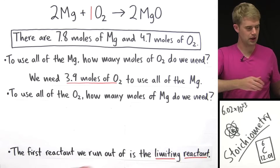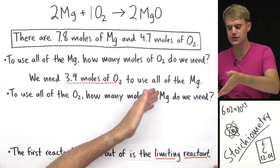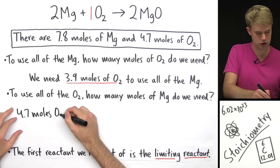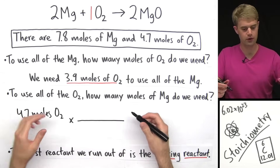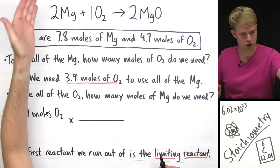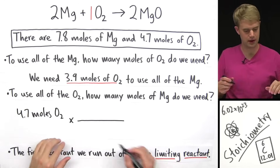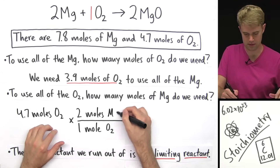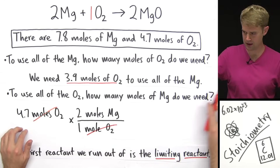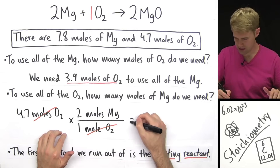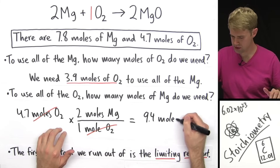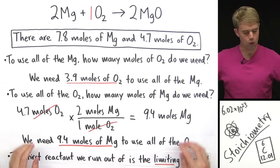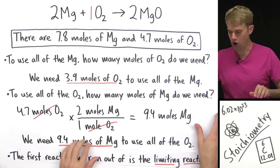Now let's ask the same thing about Oxygen. To use all of this Oxygen, how many moles of Magnesium do we need? We're starting with 4.7 moles of Oxygen and multiplying by a conversion factor to get to moles of Magnesium. The relationship is 2 moles of Magnesium for 1 mole of Oxygen, so I put 1 mole O2 on the bottom and 2 moles Mg on the top. Moles O2 cancels, and 4.7 times 2 divided by 1 gives 9.4 moles of Magnesium — meaning we need 9.4 moles of Magnesium to use all of the Oxygen.